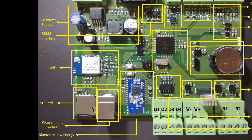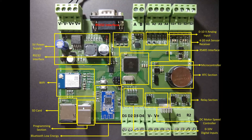The next section is the SD card section. In this section, we are going to read all the parameters of our data logger and log all those parameters along with the date, day, and time in the SD card in the form of a CSV file.